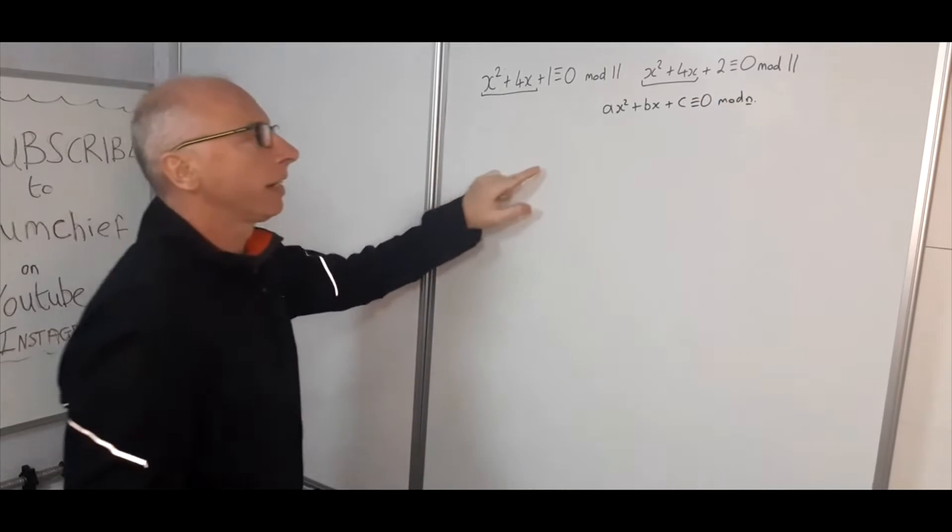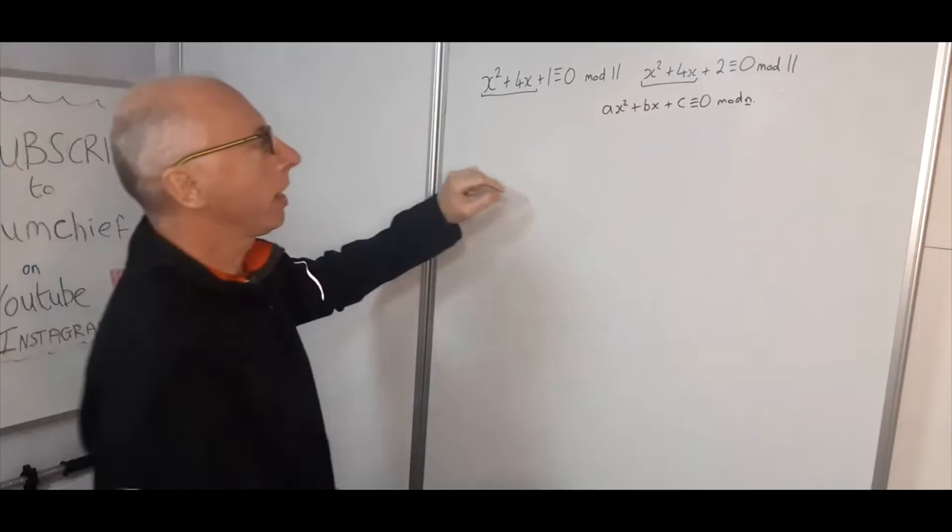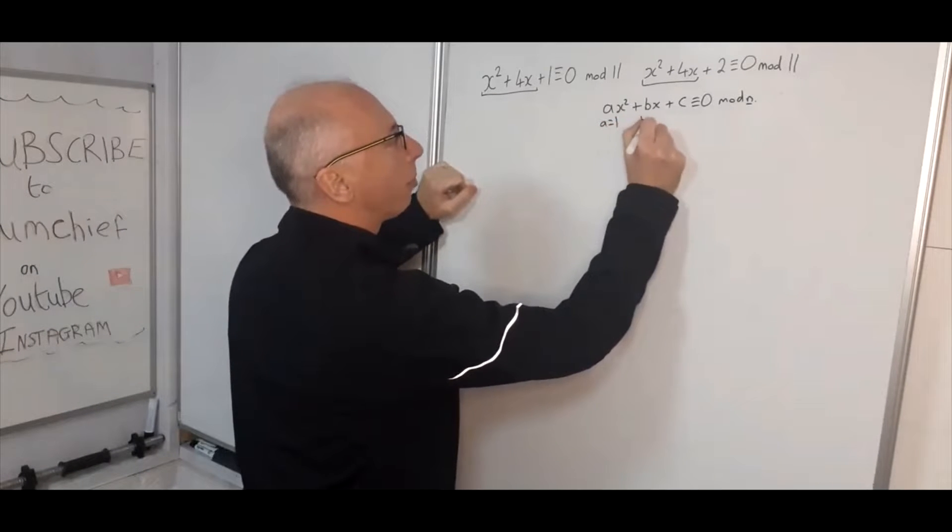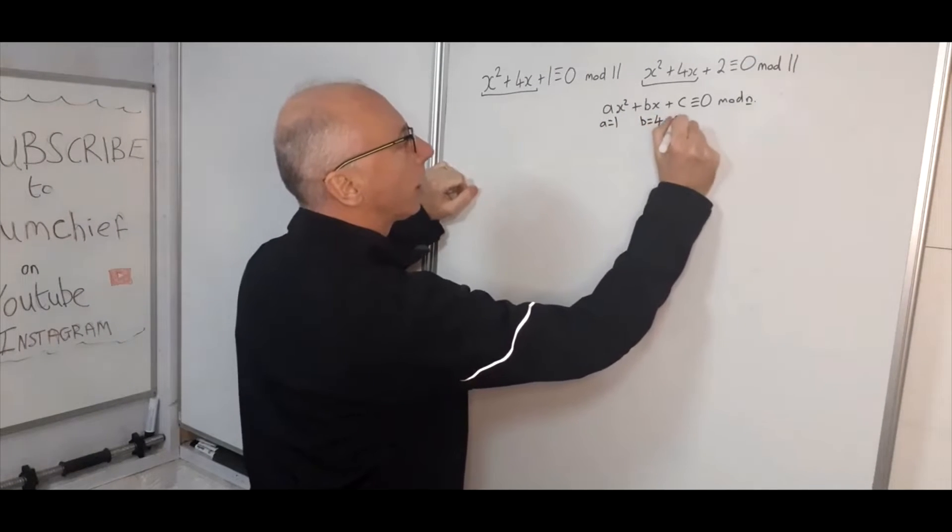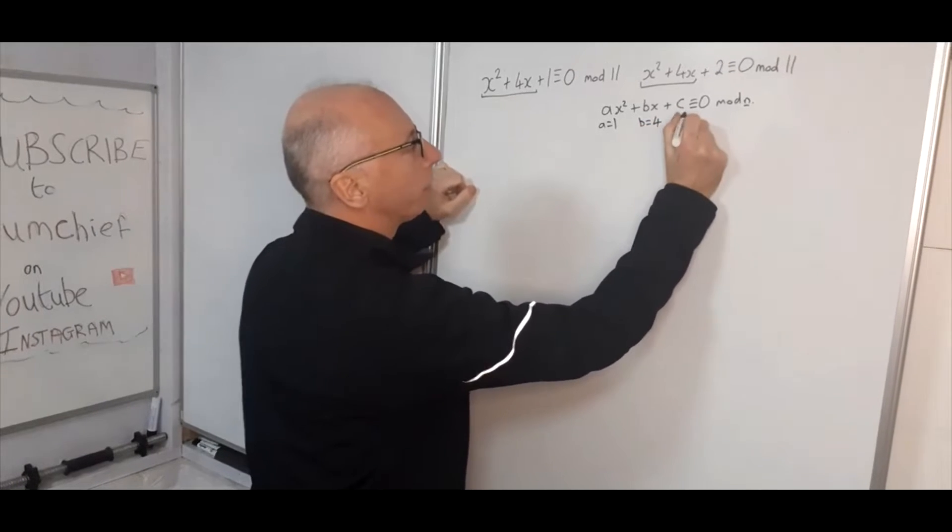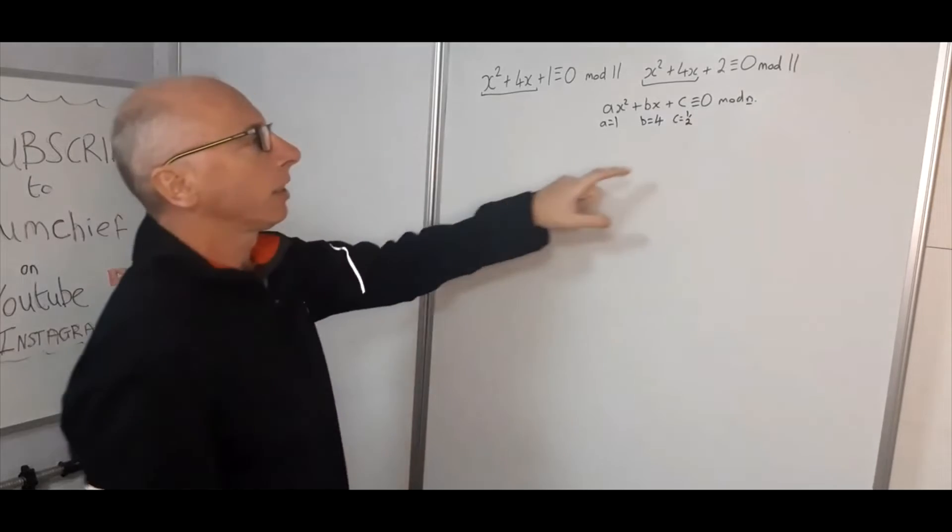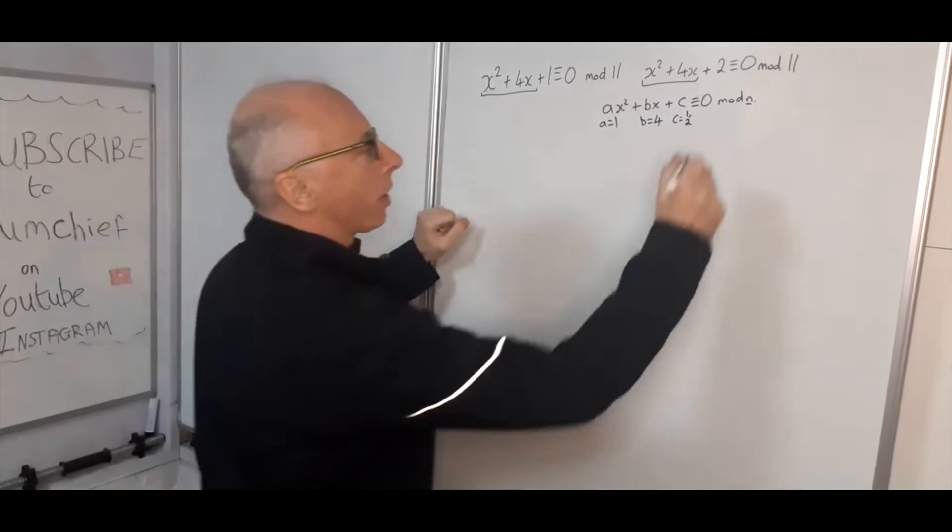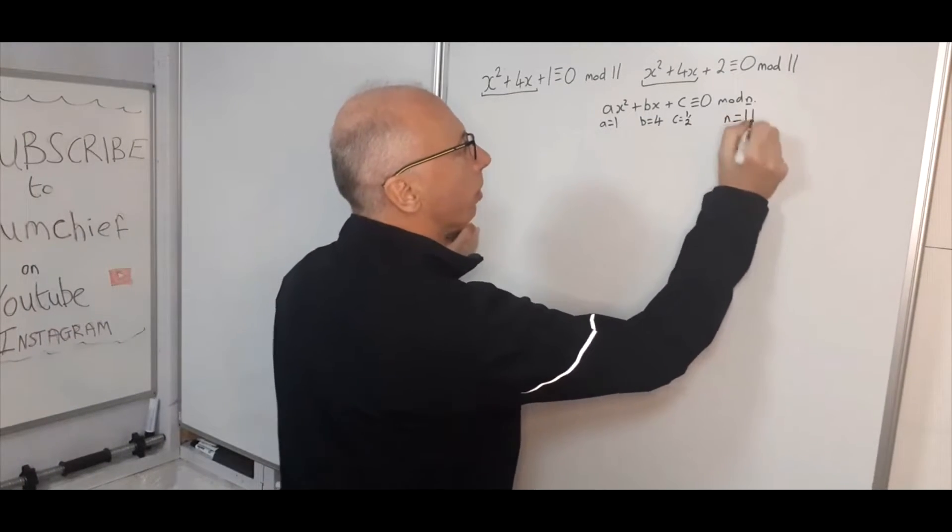Okay so in these questions here a equals 1, b equals 4, c equals 1 or 2, and our modulo is 11. So in this case our n equals 11.